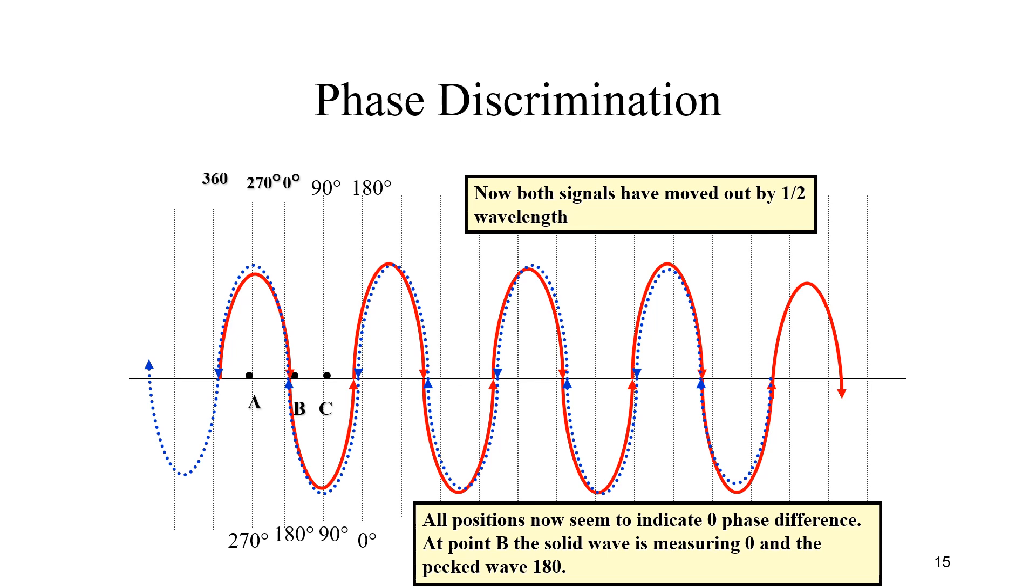All positions now seem to indicate zero phase difference. At point B the solid wave is measuring zero and the dashed wave is measuring 180. Although they are in synchronization, there is a slight difference in the transmission which is controlled by the master transmitter.